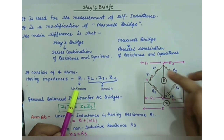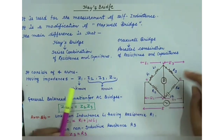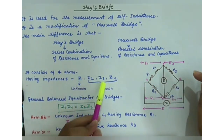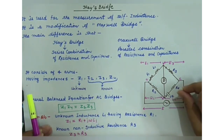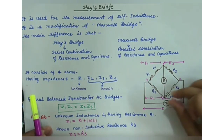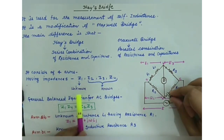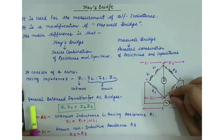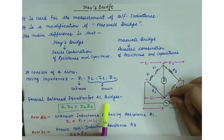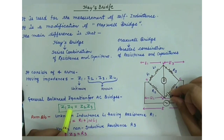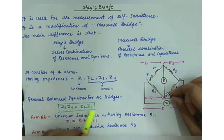Z1 is the unknown impedance, while Z2, Z3, and Z4 are known impedances. To determine the value of the unknown impedance, we use the balanced equation of the AC bridge: Z1·Z4 = Z2·Z3.